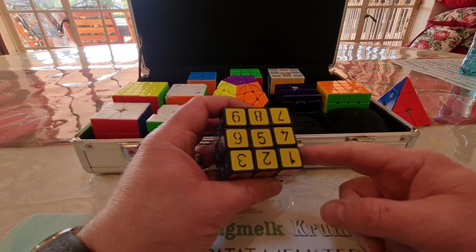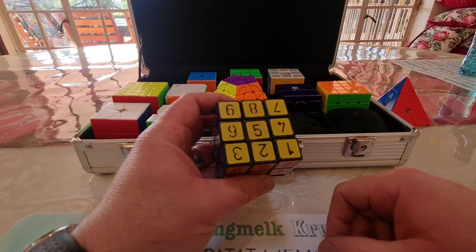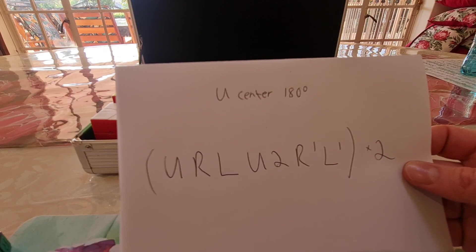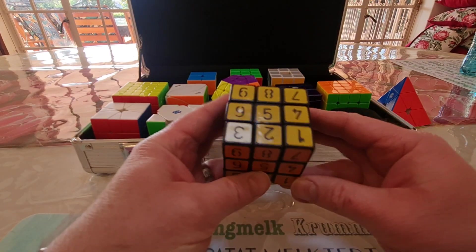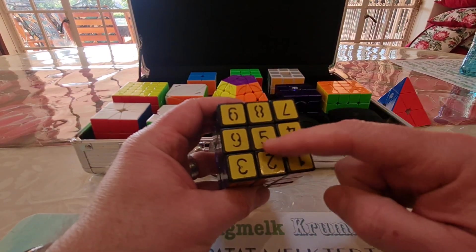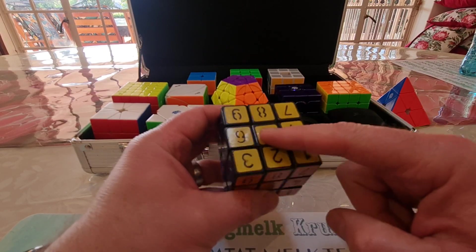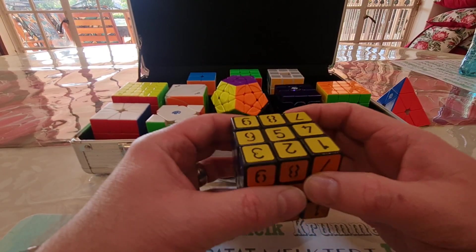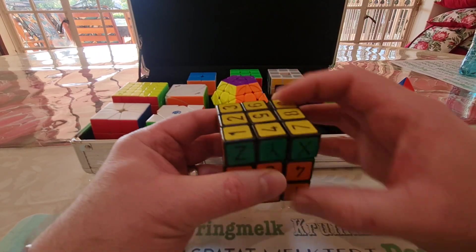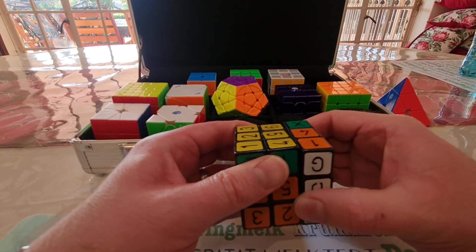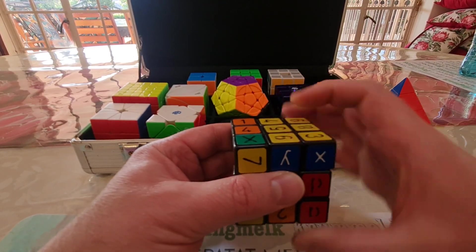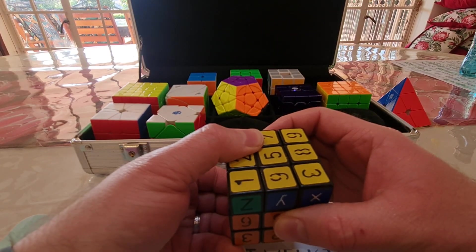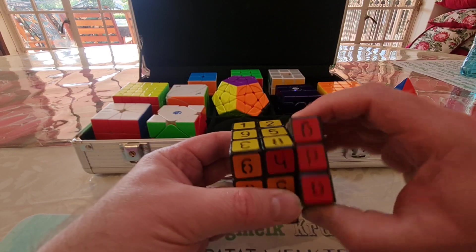The other scenario is where you've got one center that's flipped 180 degrees — then you use this algorithm over here. To illustrate that with the one that needs to be flipped 180 in the upper part of the cube, you just do: upper, right, left, upper two, right accented, left accented, and then you do it again: upper, right...